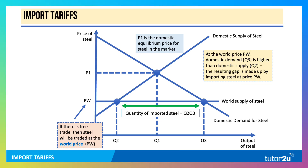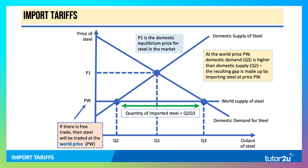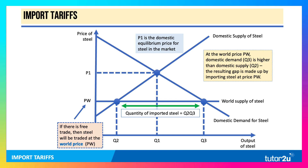Let's look at the market for steel here. The domestic price is P1. If there's free trade, then steel will be traded at the world price PW, and the quantity of imported steel will be Q2 to Q3.